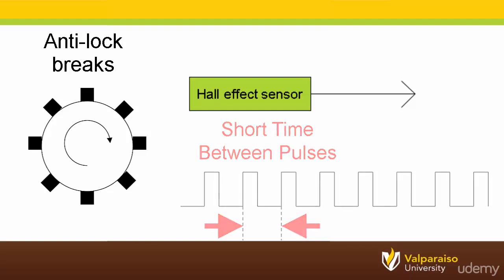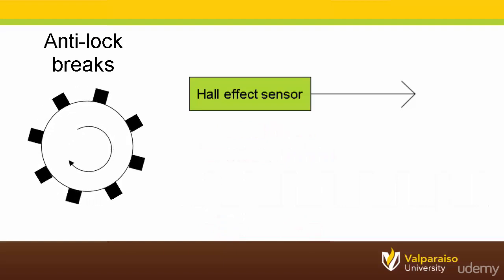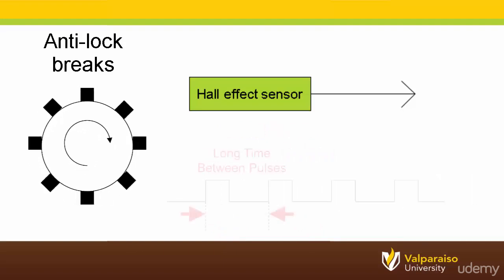However, when the car is going slow, the wheel and its magnets will spin slowly and this will result in a longer time between the pulses coming out of the Hall Effect Sensor.